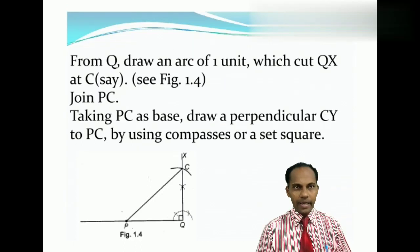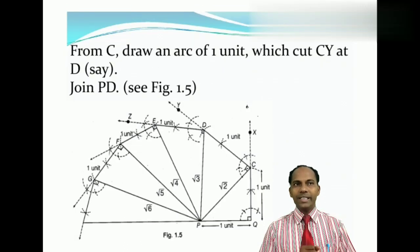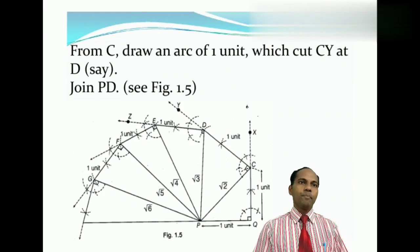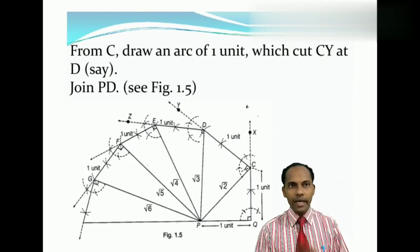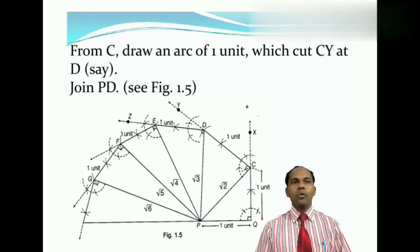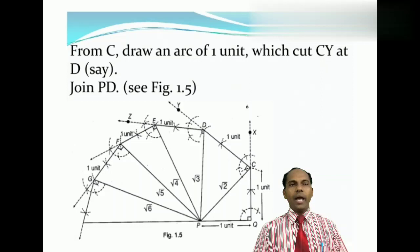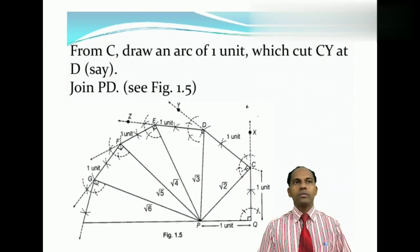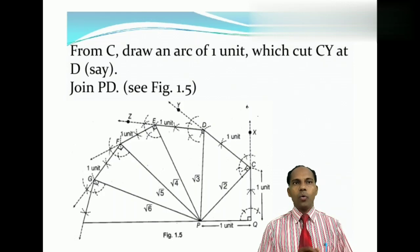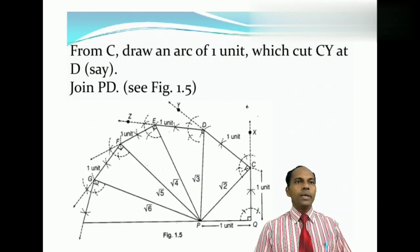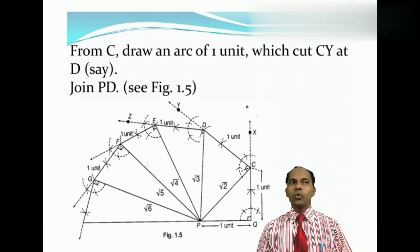And again, at point C, we have to draw a right angle triangle. Right angle so that the perpendicular will be drawn at point C. And again, from CD, we will cut an arc of 1 unit and you will join P, D, which will be equal to root 3.